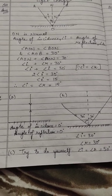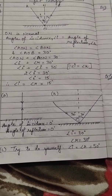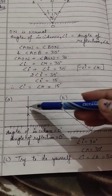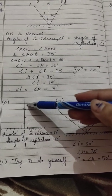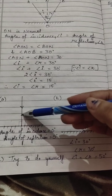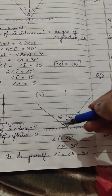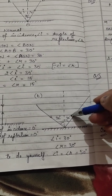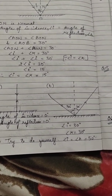Question number 10: in the following diagrams, measure and write the angle of incidence and draw the reflected ray in each case. In part A, the ray is incident normally making a 90-degree angle, so it retraces its path — I have drawn the arrow in the backward direction. In part B, you can measure with a protractor; the angle of incidence is 30 degrees, so the angle of reflection is also 30 degrees. For part C, you can do it yourself — it will be 50 degrees.